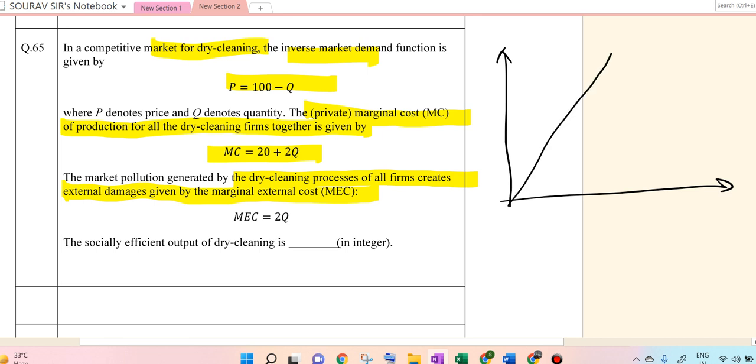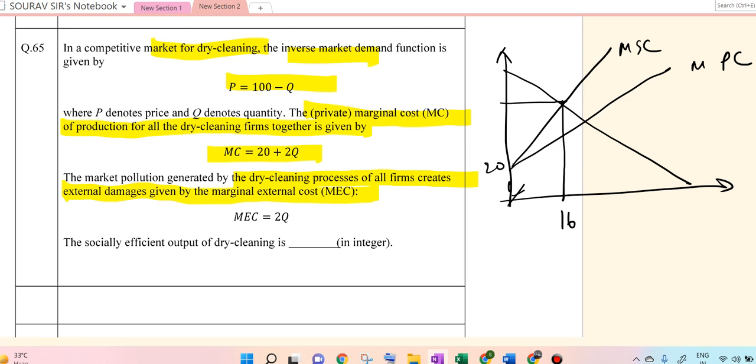Okay, so this is the MSC, marginal social cost. This actually doesn't start from the origin. Let me just draw it. It starts from 20 as this line. Okay, so once it has been done, there's a different structure. So this is 16. Okay. You can write the value directly. I'll just show you how.